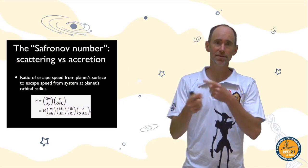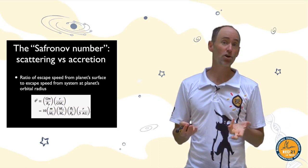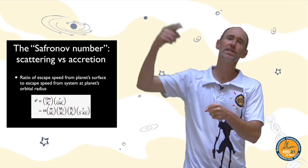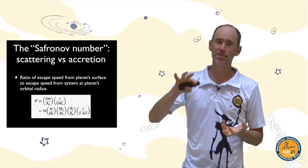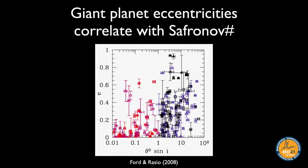So Jupiter's dynamics are dominated by scattering and Earth's by accretion. High Safronov number means scattering dominates; low Safronov number means accretion dominates. Looking at the giant exoplanets we know, we see rough confirmation: a plot with Safronov number on the x-axis and observed orbital eccentricity on the y-axis shows that above Safronov number of about one the eccentricities are much larger, and below one they are much lower on average.